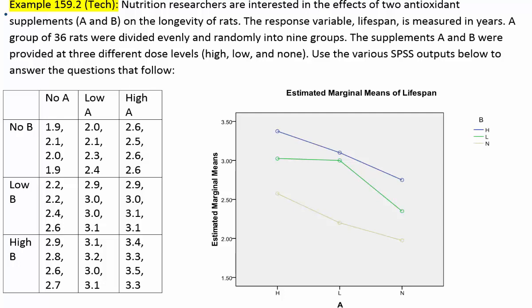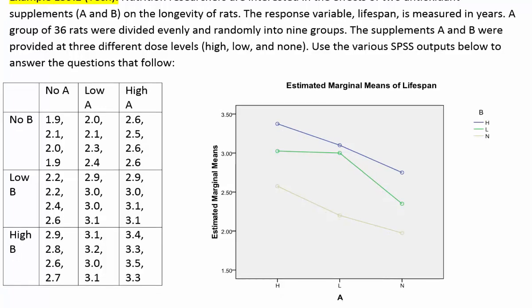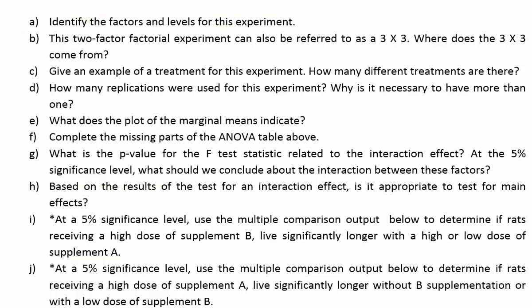Example 159.2. Nutrition researchers are interested in the effects of two antioxidant supplements, A and B, on the longevity of rats. The response variable lifespan is measured in years. A group of 36 rats were divided evenly and randomly into nine groups. The supplements A and B were provided at three different dose levels: high, low, and none. Use the various SPSS outputs below to answer the questions that follow. Let's take a look at those questions.